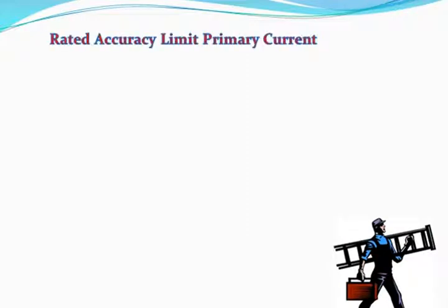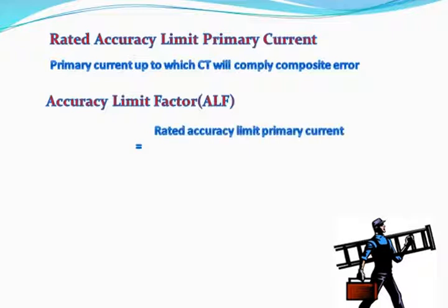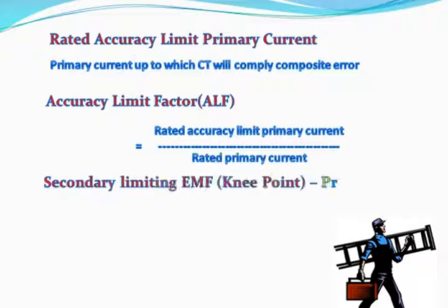Rated accuracy limit primary current: the primary current up to which CT will comply with composite error. Accuracy limit factor, or ALF, is equal to rated accuracy limit primary current divided by rated primary current. The secondary limiting EMF, or knee point voltage, is calculated accordingly for Class X CT.